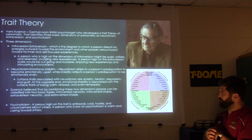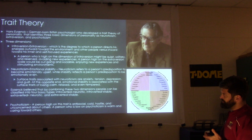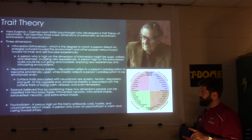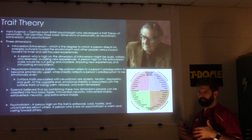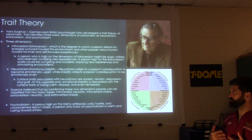Moving to neuroticism and emotional stability — neuroticism refers to a person's predisposition to become emotionally upset, while emotional stability reflects a predisposition to be emotionally even-keeled and calm. Surface traits associated with neuroticism include anxiety, tension, depression, and guilt. At the opposite end, emotional stability is associated with being calm, relaxed, and even-tempered.